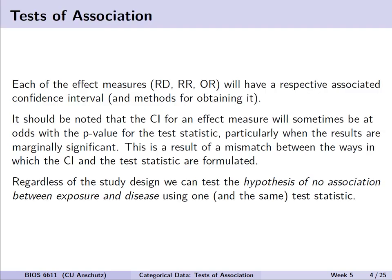Let's touch base on our last lecture where we had effect measures for two-by-two tables such as the risk difference, the relative risk or risk ratio, and the odds ratio. We saw each one of those had a respective associated confidence interval and there are different methods for obtaining it. We provided some formulas in the last lecture but different software may have different ways of approaching the formulas or different approximations.